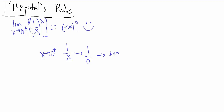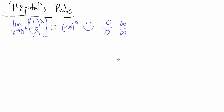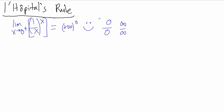We can't use L'Hôpital's rule directly because we didn't get the form 0 over 0 or infinity over infinity. If we get one of those forms we can apply L'Hôpital's rule directly, but we got this form instead. So we need some algebraic manipulations to eventually get to one of those forms.